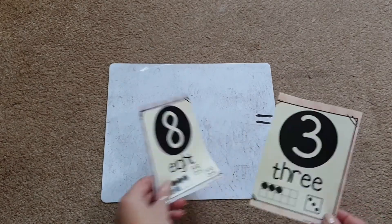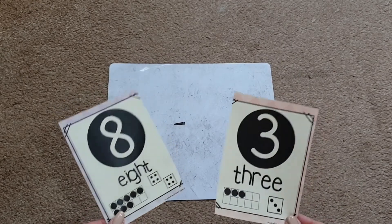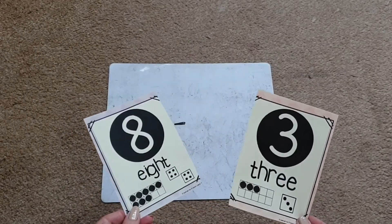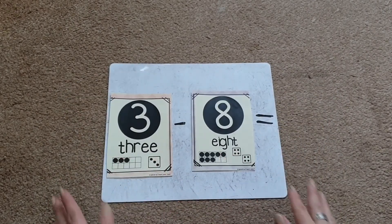And then obviously you need to think about, ask children to think about which way around the numbers go for it being a subtraction. So obviously we need to discuss, you know, if we have it around this way, 3 take away 8, is that going to work?